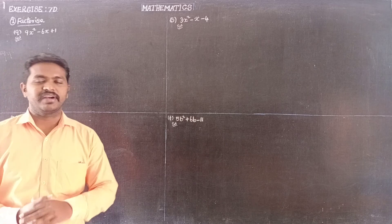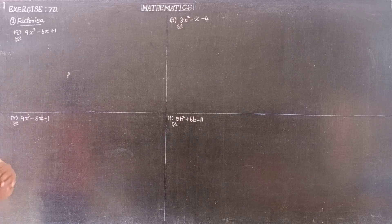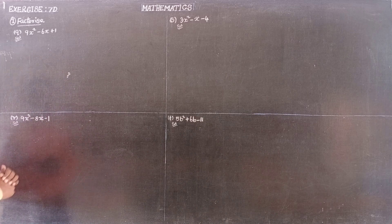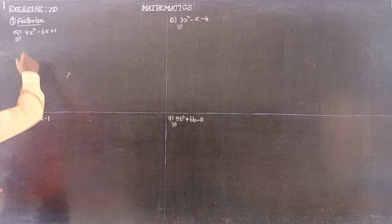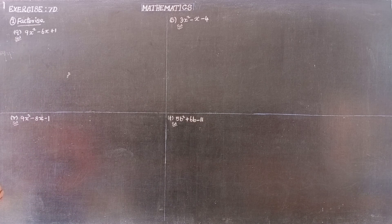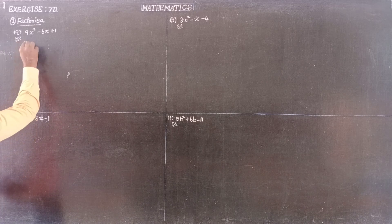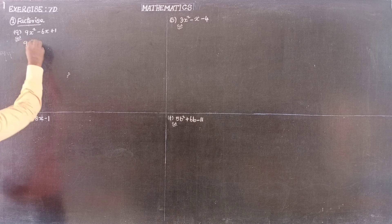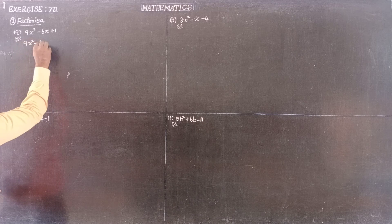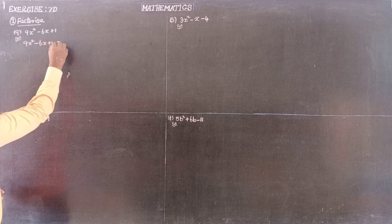Next, Exercise 70. Question number 1: factor the following expression. 9x squared minus 6x plus 1.